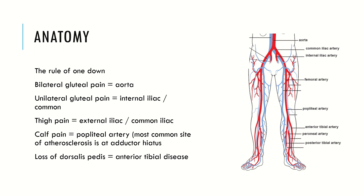In vascular, you have the rule of one up. If you've got bilateral gluteal pain, you're suspecting the pathology is one up in the aorta, because the glutes are supplied by the internal iliac artery and bilateral pain implies a common pathology. If you've got unilateral gluteal pain, you suspect the internal or common iliac artery. Thigh pain points to the external or common iliac. Calf pain points to the popliteal artery. Femoral-popliteal disease is the most common site of atherosclerosis, particularly at the adductor hiatus. Loss of dorsalis pedis suggests anterior tibial disease, and loss of the posterior tibial pulse suggests posterior tibial disease.